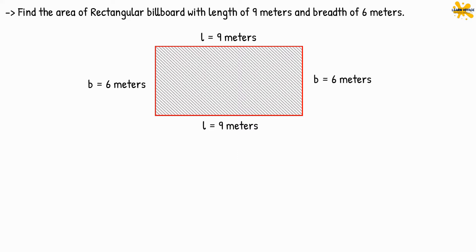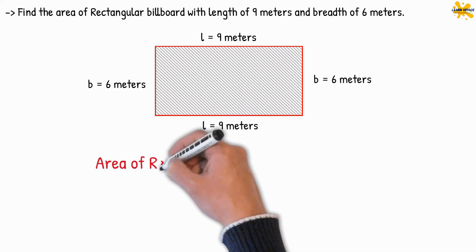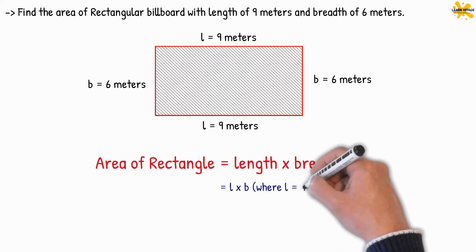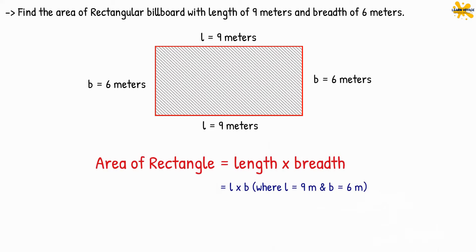Let me help you with the calculations. The length of the rectangle L is 9 meters and breadth B is 6 meters. Hence, the area of rectangle will be 9 multiplied by 6. The correct answer is 54 square meters.